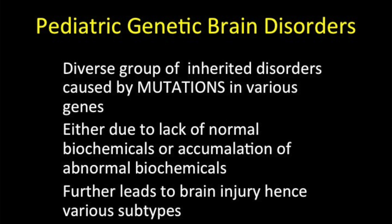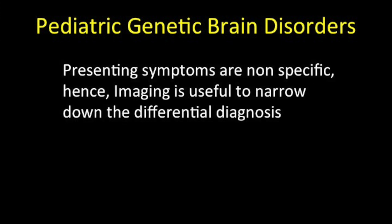This leads to brain injury due to bad biochemicals or lack of normal biochemicals, and hence the patient has various signs and symptoms. Because there are 50 conditions and presenting symptoms are non-specific in most cases, imaging allows the pediatrician or pediatric neurologist to narrow the differential diagnosis. If a patient has to undergo a battery of genetic tests, it can cost up to three lakh rupees. Our job is to understand the pattern and give the least possible differential diagnosis, reducing the cost of genetic testing and arriving quickly at a specific diagnosis.